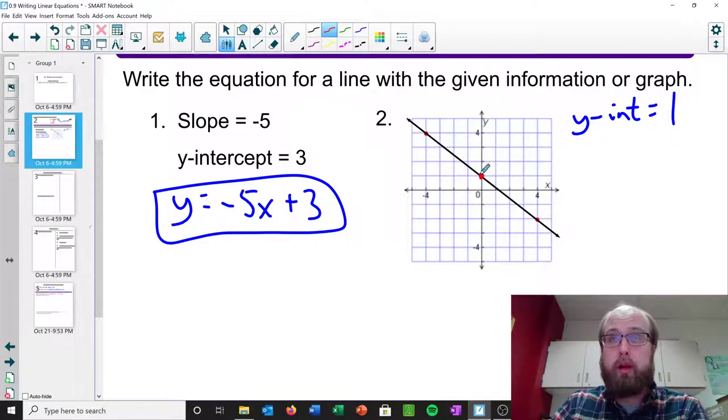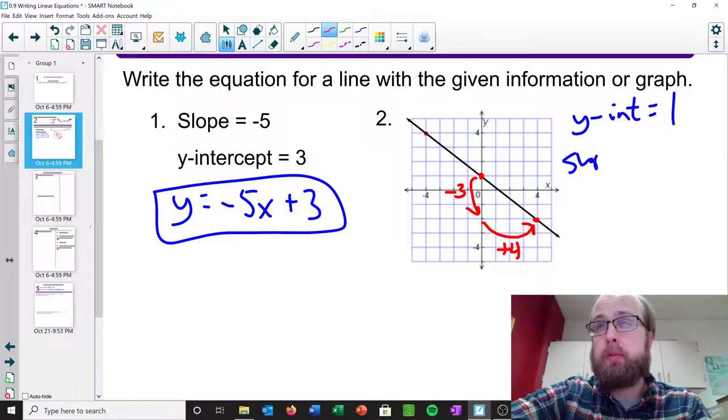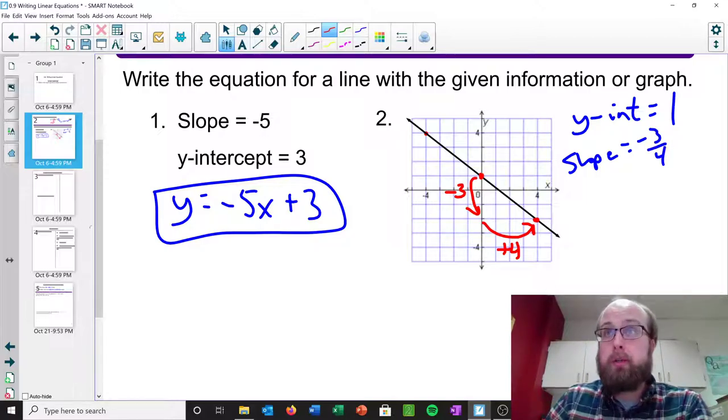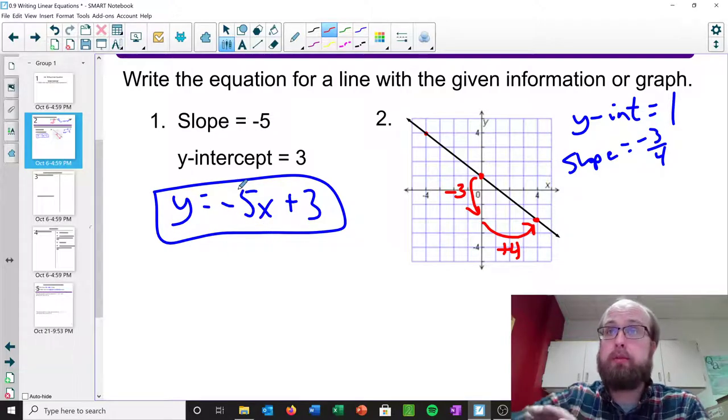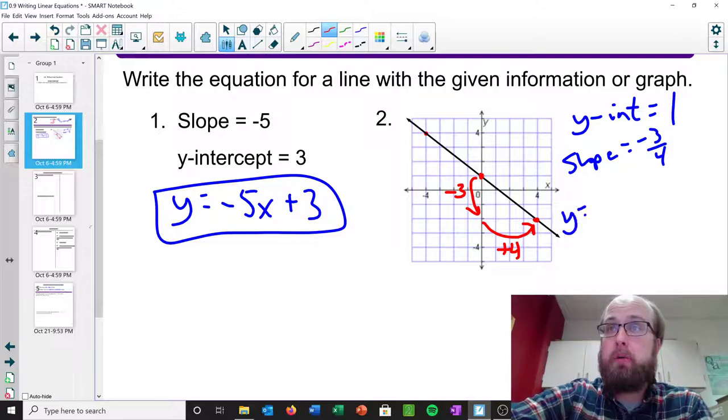And then slope is just rise over run. To do that, remember, we need two points. So let's say we're going from here to here. That has a rise of negative 3, right, because we'd be going down 3. And then we'd go right to 4, so it has a run of positive 4. And so our slope would be negative 3 over 4. Well, we have the two pieces of information we need. We can go ahead and just put that into our equation. And so we'd have y equals negative 3 fourths x plus 1.